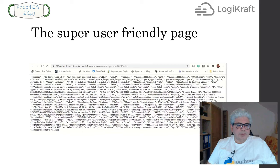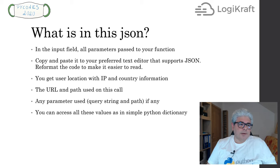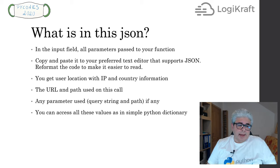This is the result: we are returning the dictionary we received. I recommend you copy and paste this into your text editor and try to render the code. You'll see lots of useful information received in the event when your function is called — including the path parameters, query parameters, the caller's IP, the country, the URL they used, the HTTP method, and more. You can access all of these using a simple dictionary.